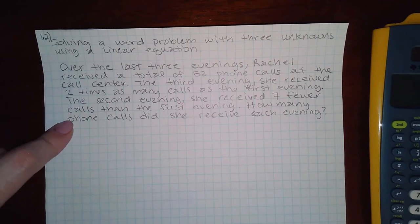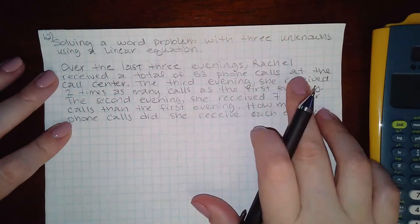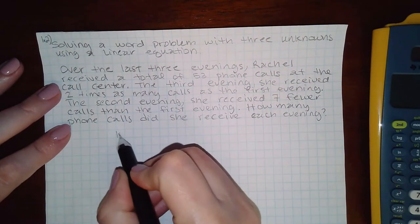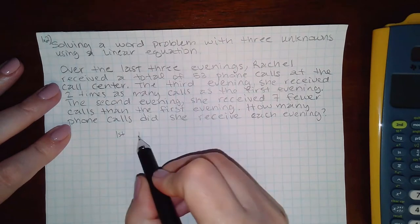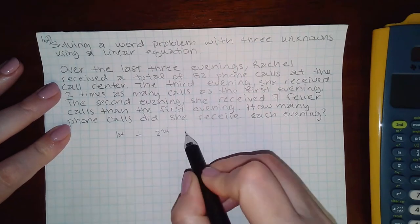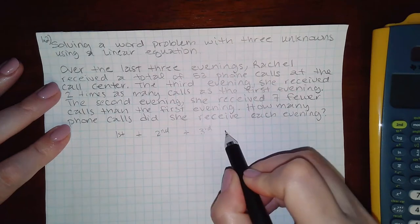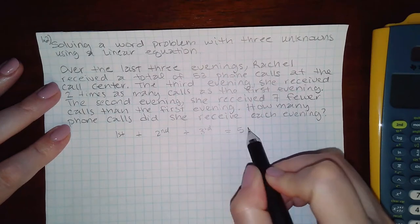How many phone calls did she receive? The first sentence tells us that over the three nights, the first night plus the second night plus the third night will equal the 53 total phone calls.